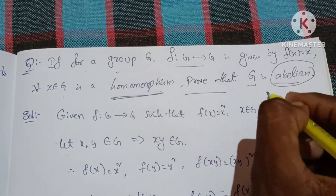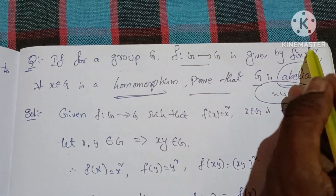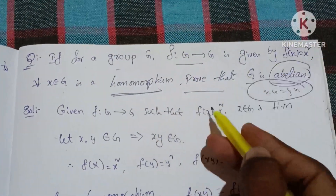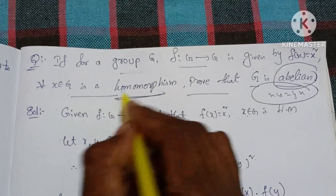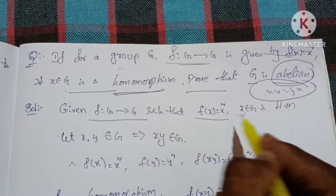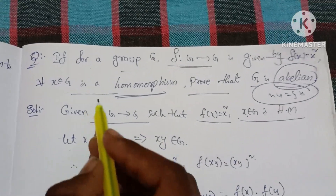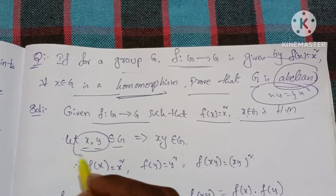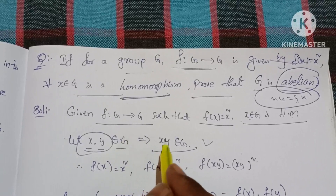Abelian means commutative: xy = yx. We will prove this using the condition that f(x) = x² is a homomorphism. Let x, y belong to G. By closure, xy also belongs to G.